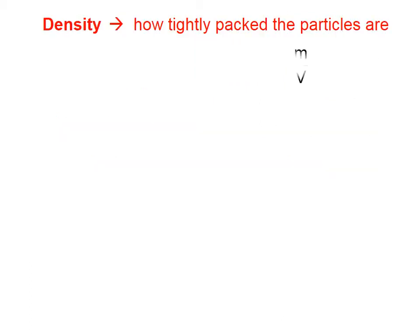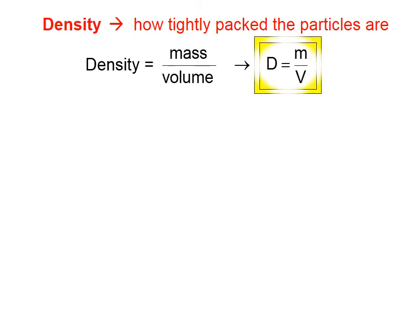Another property of matter is density. Density refers to how tightly packed the particles are. If they're packed very tightly, it has a high density. If they're not packed very tightly or the particles themselves don't have much mass, then it has a low density. So density is mass divided by volume.